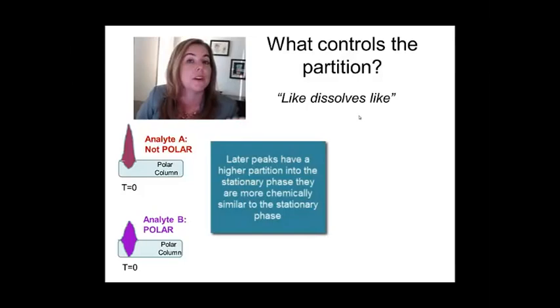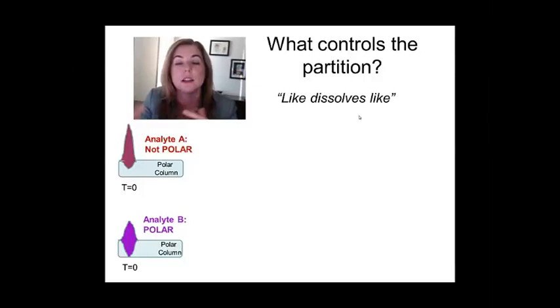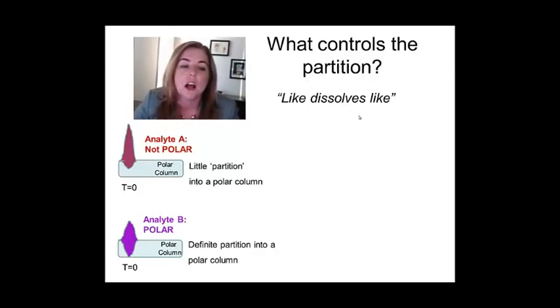Now, as you're going to see, as we go through the specific chromatographies, there are other factors that will contribute to the partition and the speed. But this is a big important one. It's particularly important in liquid chromatography, where it also can have something to do with the mobile phase. Because remember, the analyte's not choosing the stationary phase or nothing. It's choosing the stationary phase or the mobile phase. So if you manipulate the mobile phase, you can actually drive things into the column, for example, and slow them down.